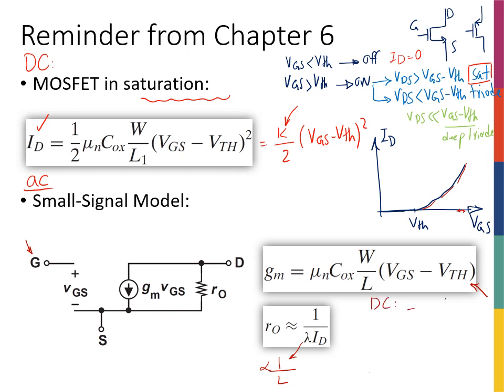The DC analysis will tell us if the transistor is on or off, if the transistor is in saturation or triode, and if we are in saturation, and if we are on and we are in saturation, then we know that I can use my MOSFET as an amplifier.